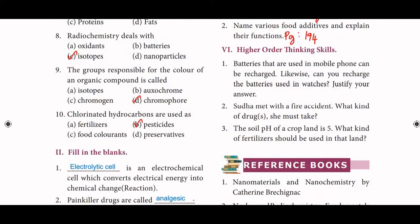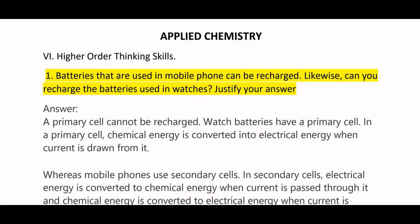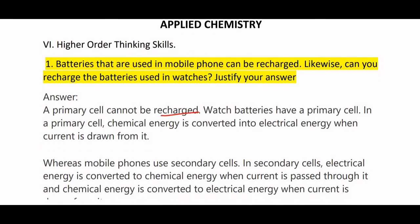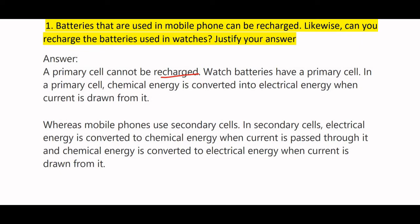Higher Order Thinking Skills. Batteries used in mobile phones can be recharged. Can you recharge the batteries used in watches? A primary cell cannot be recharged. Watch batteries have a primary cell — chemical energy is converted into electrical energy when current is drawn. Mobile phones use secondary cells; in secondary cells, electrical energy is converted to chemical energy when current is passed through it, and chemical energy is converted back to electrical energy when current is drawn.